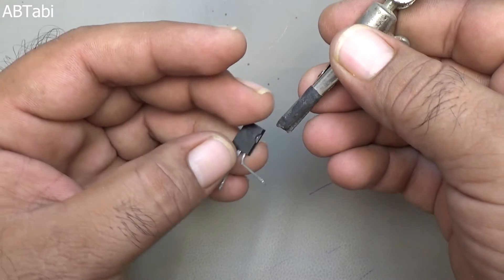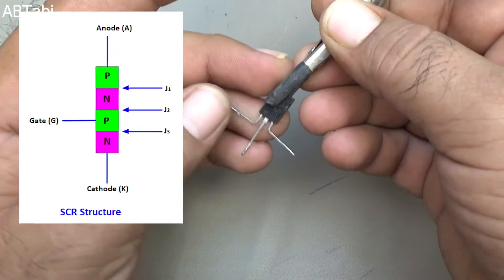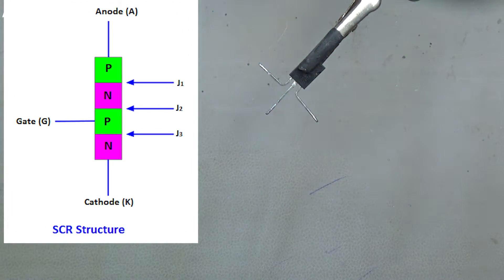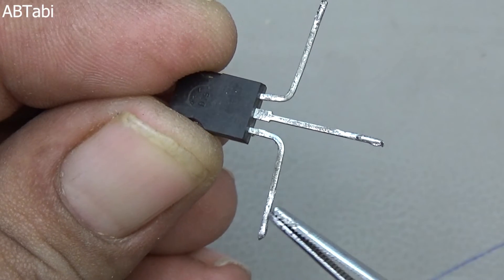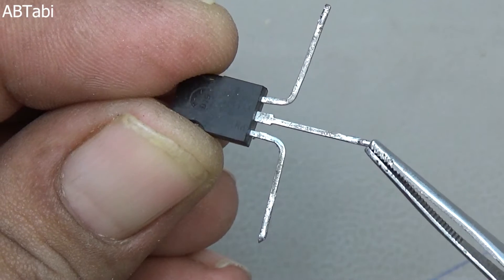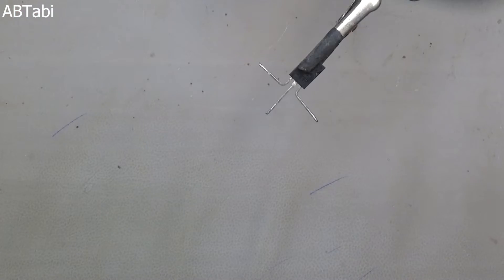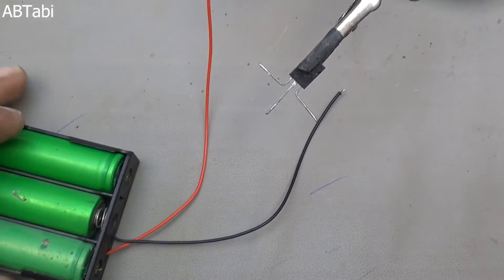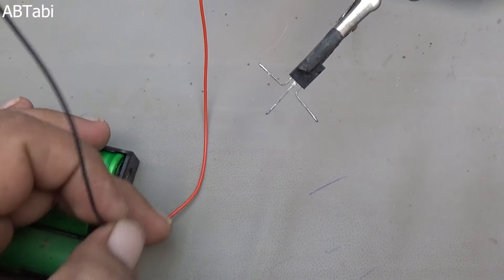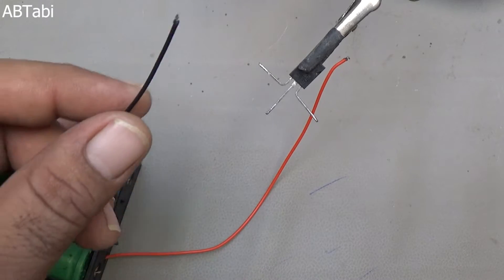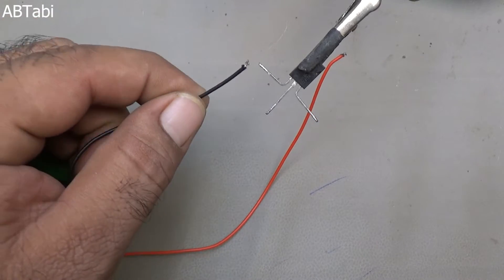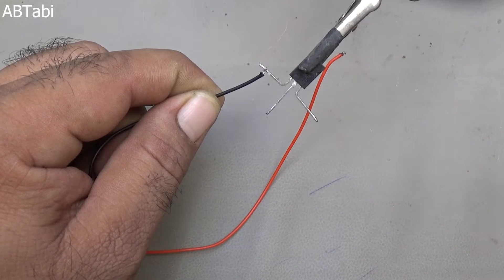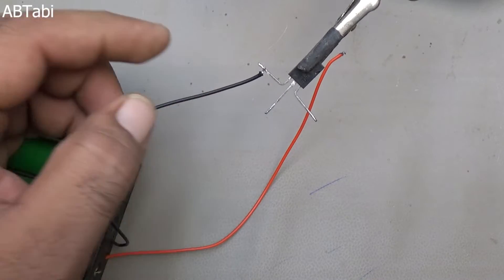A Silicon Controlled Rectifier SCR is a four-layer solid-state current controlling device with three terminals. They have anode and cathode terminals like a conventional diode, and a third control terminal referred to as the gate. SCRs are unidirectional devices.